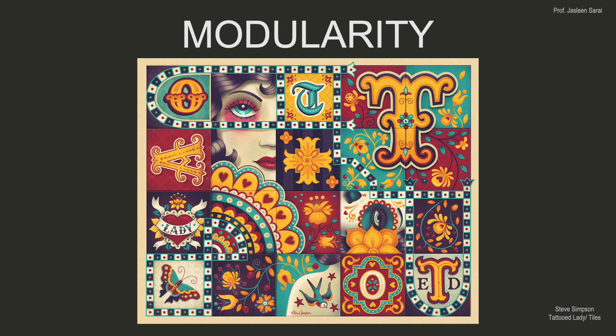Sometimes the rules can be broken a little to create contrast and interest. This piece has all kinds of patterns, rhythms, and modules — you should pause and notice all the ways pattern is used here. One particular pattern exits the module slightly, creating a focal point, which is discussed in another video. When designing, you have to think about when you're following the rules and when you're breaking them, and how much — those are the key decisions you should be making.